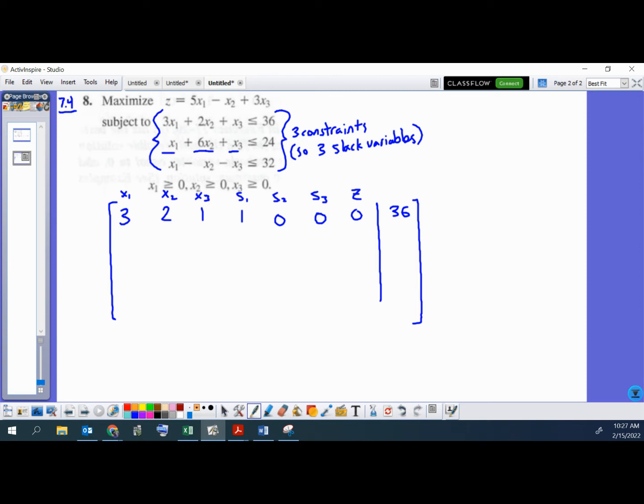All right. So next we do 1, 6, 1. And then the slack variables, and then 24. So 1, 6, 1, 0, 1, 0. Now we're using s2 and not s1 or s3. No for z. And then 24.